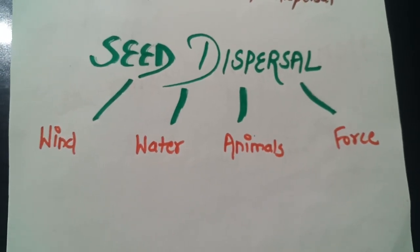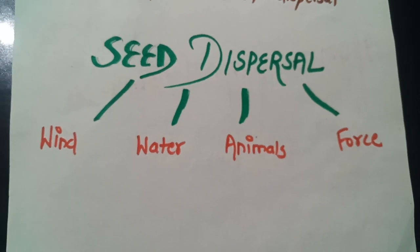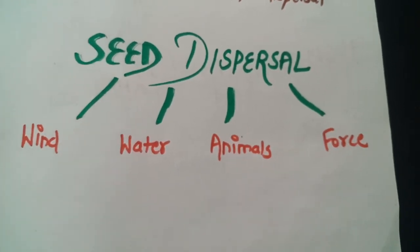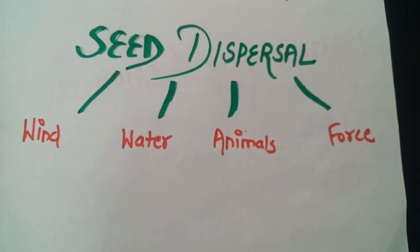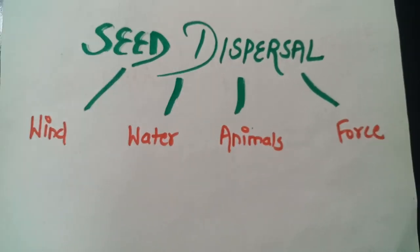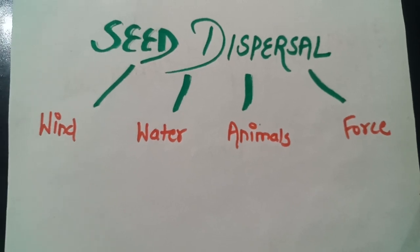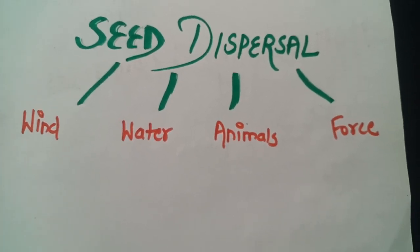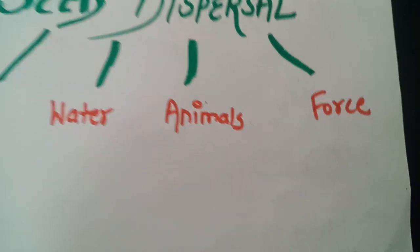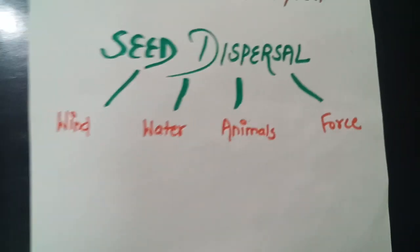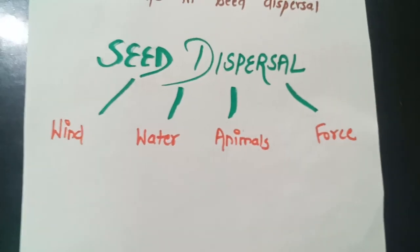If seeds are carried away by animals or humans, it is known as dispersal by animals. For example, different kinds of seeds like mango seed or an apple seed. Some plants forcefully scatter their seeds also called dispersal by explosion or dispersal by force. For example, pea plant.